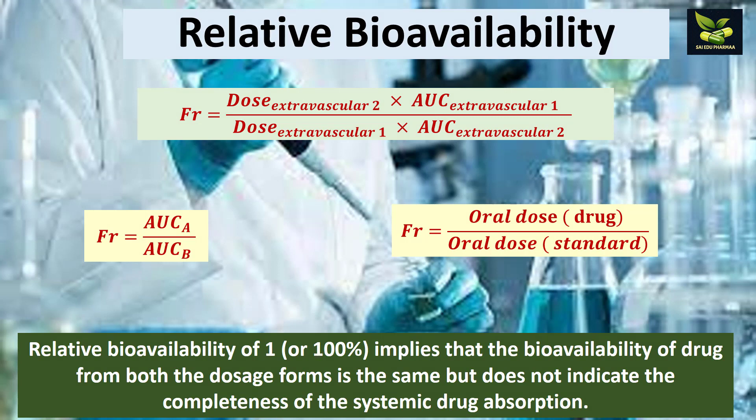The formula for relative bioavailability is: FR = (Dose_EV2 / Dose_EV1) × (AUC_EV1 / AUC_EV2). In some books it is written as FR = AUC_A / AUC_B, which applies when the dose is the same for both formulations. If the dose is different but the AUC is the same, then FR = oral dose of the drug / oral dose of the standard.